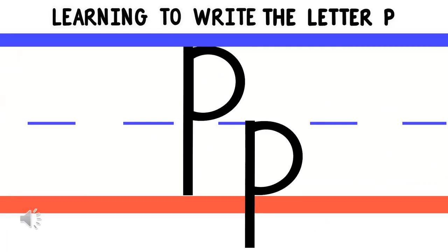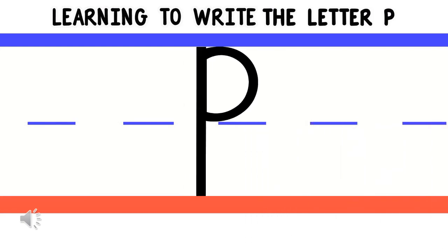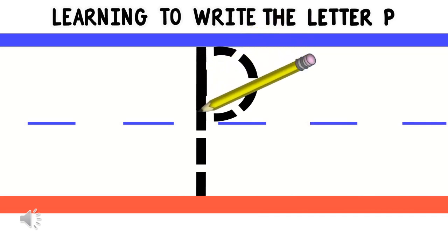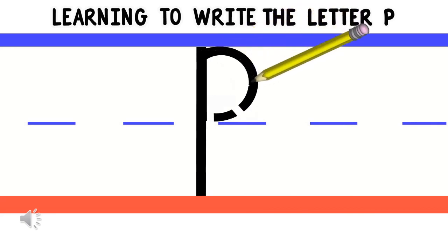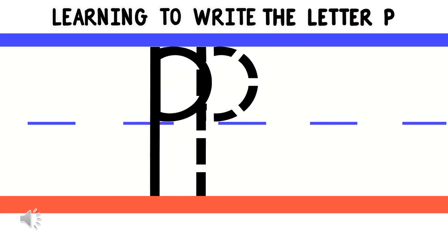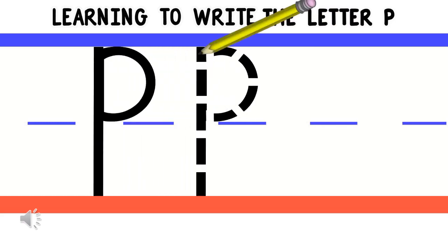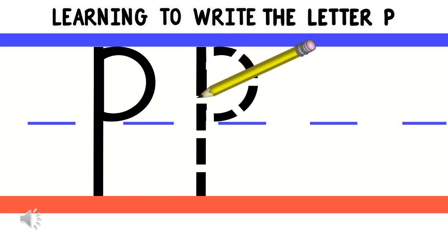Now, let's learn how to write the letter P. Let's begin with the capital P. From the top, make a line going down to the bottom. Then, go back to the top. Then, make a curved line going to the middle. Now, you have a capital P.